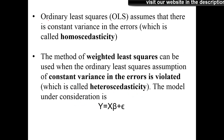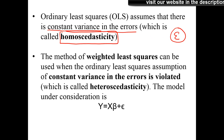The ordinary least square assumes that there is constant variance in the errors. We assume that the error term in ordinary least square has a constant variance, and we call that property as homoscedasticity — the error term is said to be homoscedastic. The method of weighted least square can be used when the ordinary least square assumption of constant variance in the error is violated.